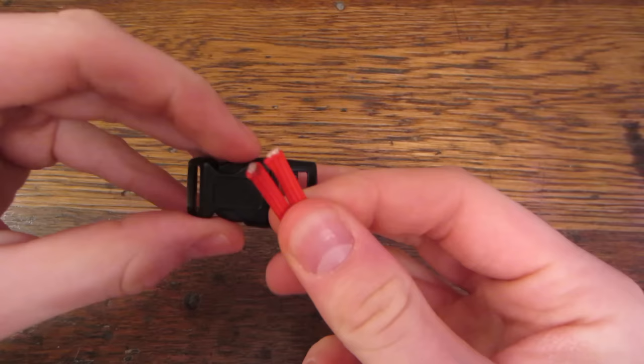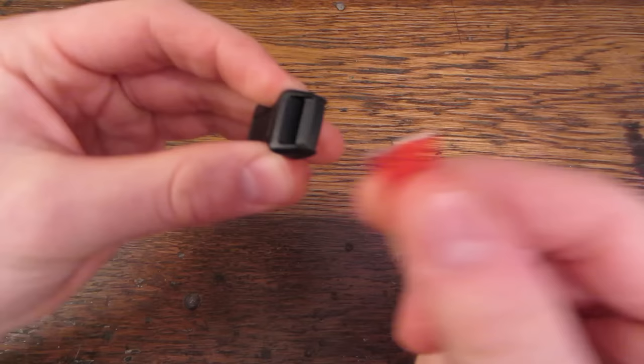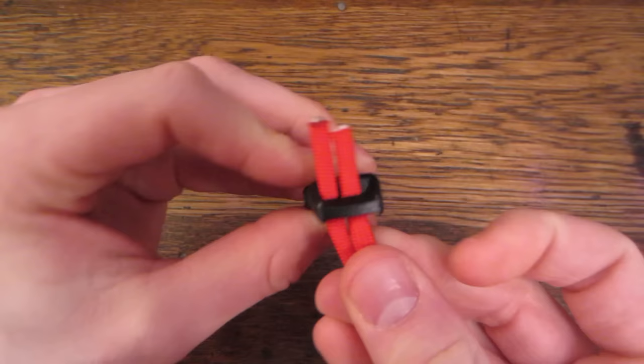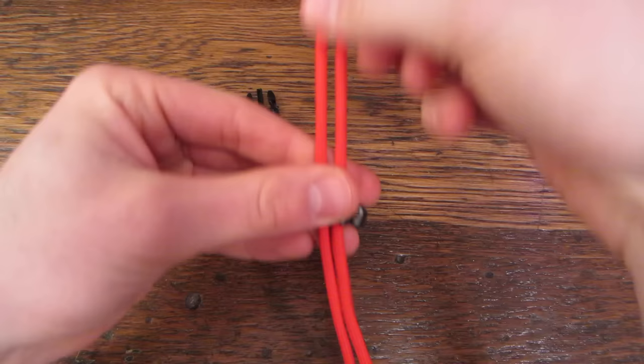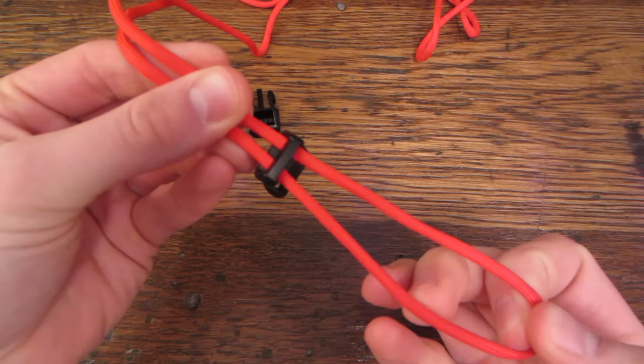We're going to find the two ends of the cord and it doesn't matter which side of the clip we start with but I generally start with this end. Take the two ends of cord and feed it through the bottom and up through the top of the clip like so. Then we're going to pull that through until we reach the end like so.